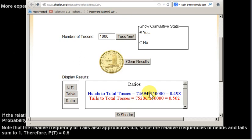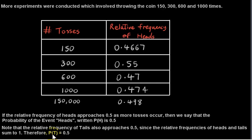So when we add these two fractions, we will get 1. So these two numbers add to 1. Since the relative frequency of tails is approaching 0.5, we can say that the probability of getting tails when we throw a coin is 0.5.